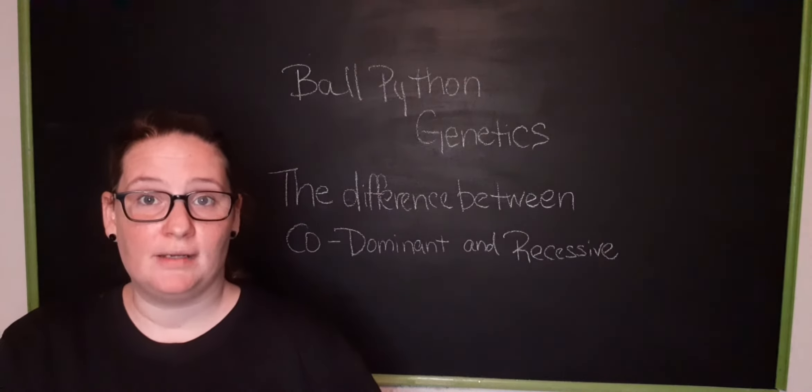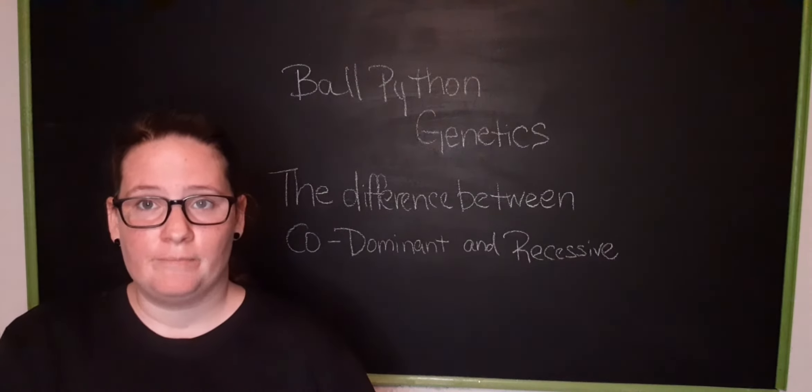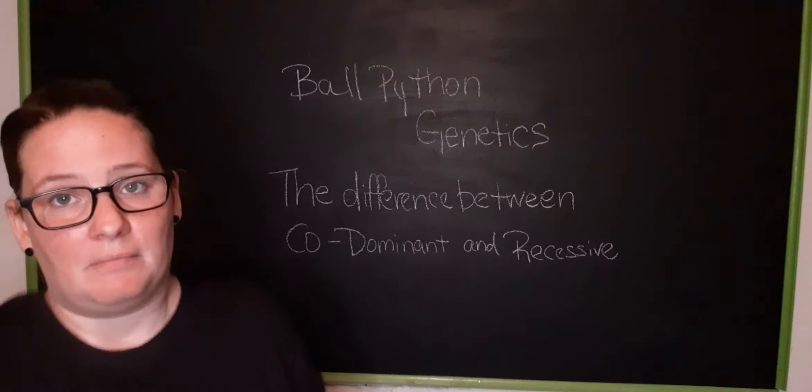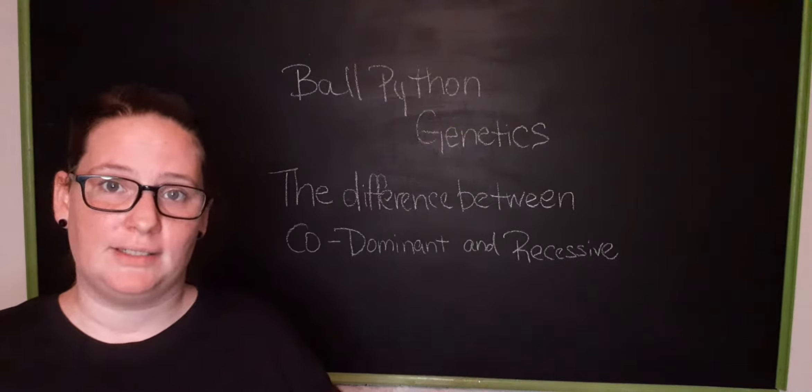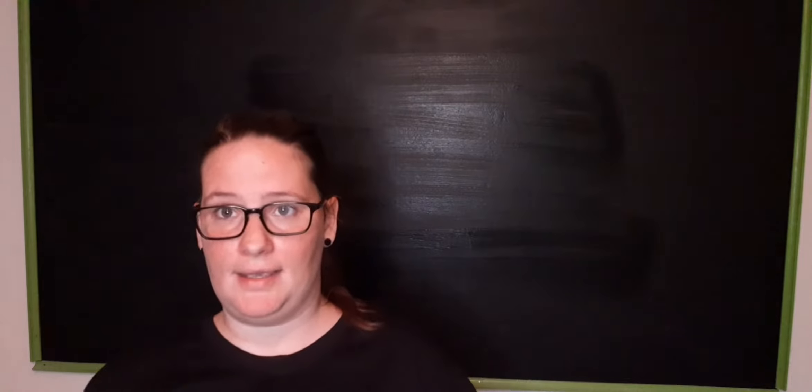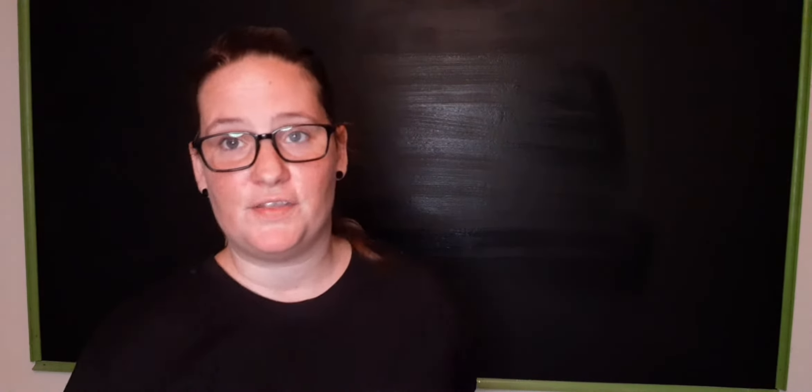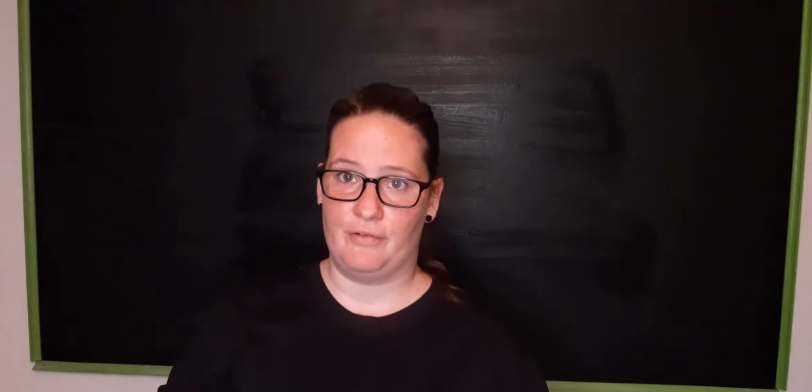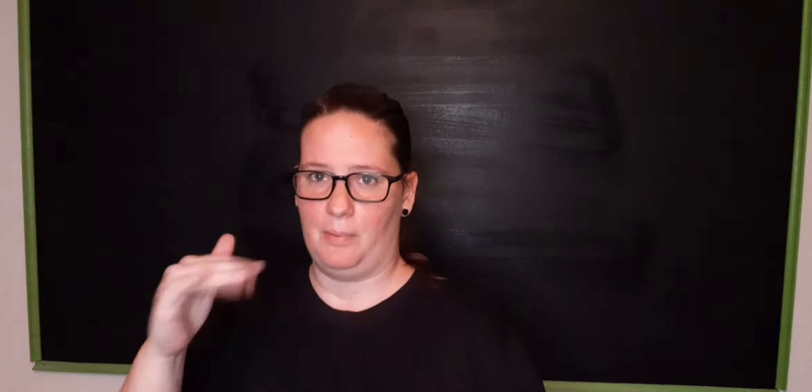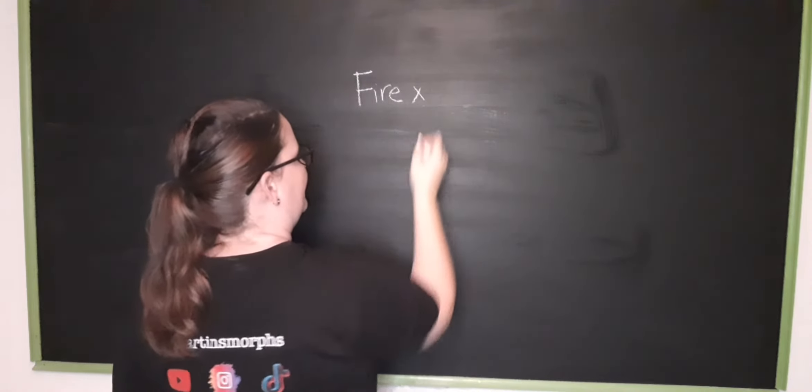The difference between codominant and recessive genes. People think that these work differently but in mathematics they actually work exactly the same. Let's start with a simple pairing. In ball pythons there are two chromosomes to every allele. There are two chromosomes for the gene of that ball python. Let's do an incomplete dominant pairing of a fire and a normal.